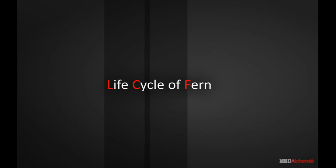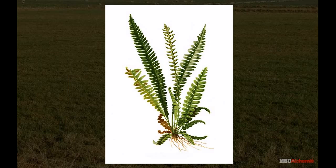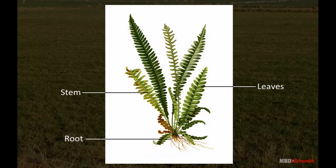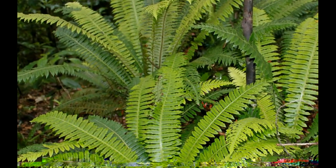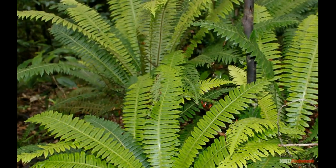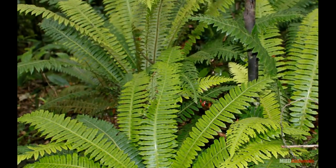Life Cycle of Fern. The plant body of fern is divided into root, stem and leaves. Leaves are the only aerial part of the plant body. Stem is represented by the underground rhizome.